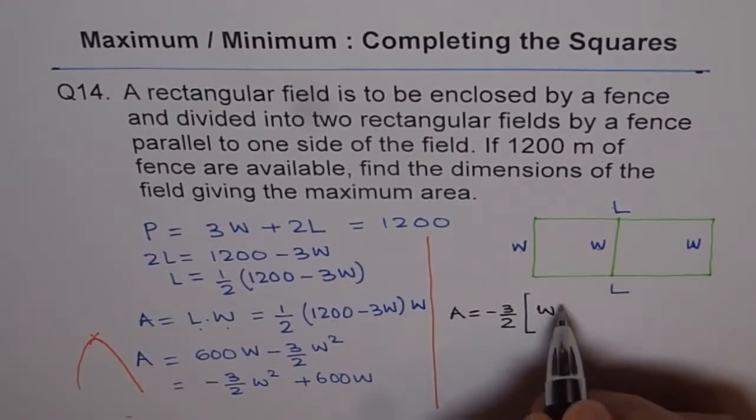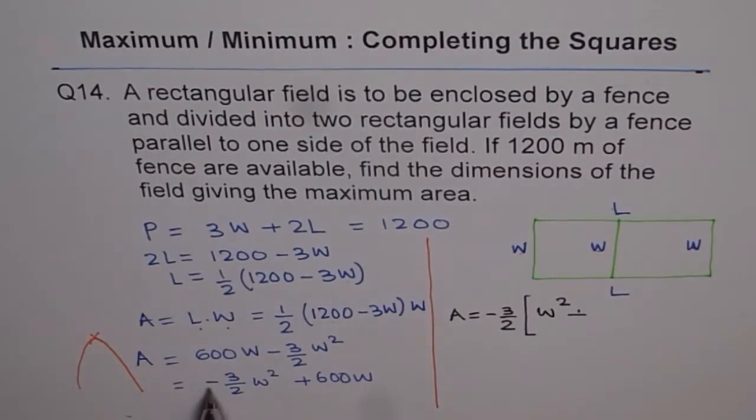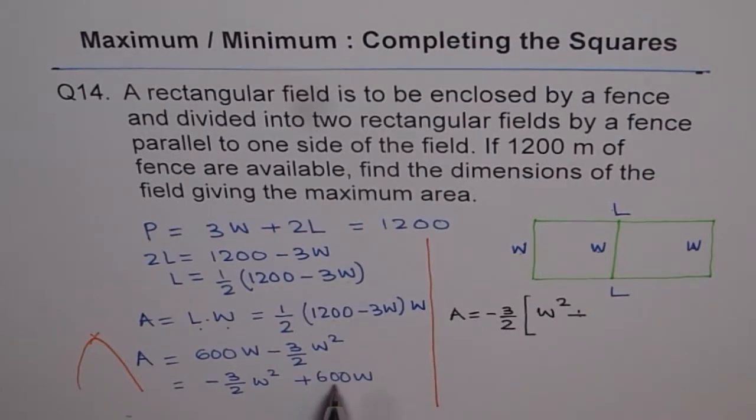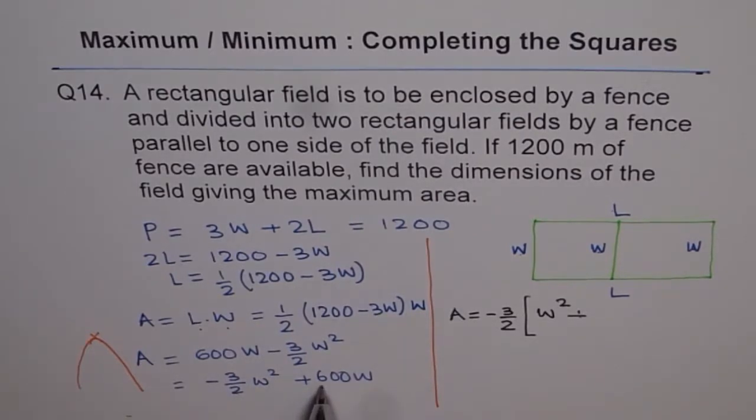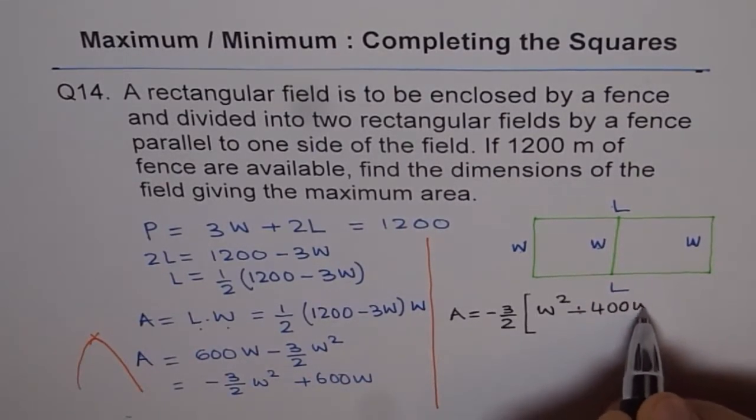So in the brackets, we get W square plus, no, plus divided by minus gives you minus, right? So minus and 3 over 2 divided by 3 over 2. That means first you divide by 3, then you multiply by 2. If you divide by 3, you get what? 600 divided by 3 is 200 and when you multiply by 2, you get 400 and that is how we get here 400W, right?